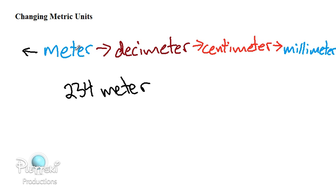Now we're going to see what happens when we change 234 meters into a decimeter, a centimeter, and millimeter. So decimeters, centimeters, and millimeters.